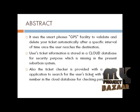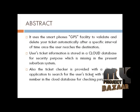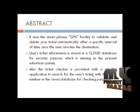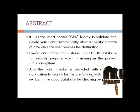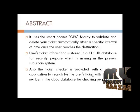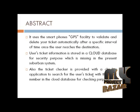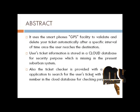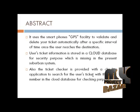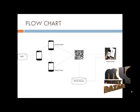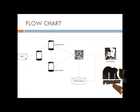The ticket checker verifies the ticket against the cloud database. If the correct information is found, the ticket checker can easily verify the ticket. If the ticket is valid it will be shown as valid; if already used it will be collapsed, and the checker will proceed to let the passenger outside. This completes the abstract of the Android suburban railway ticketing system. Now let us see the flowchart.